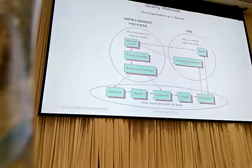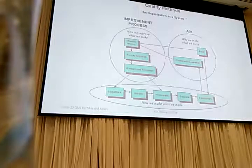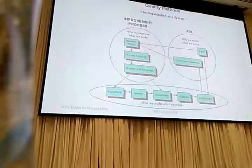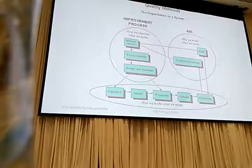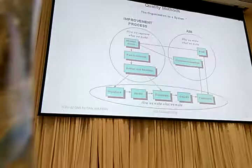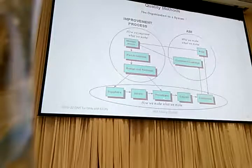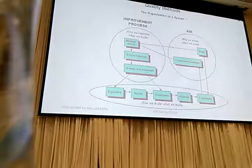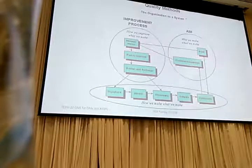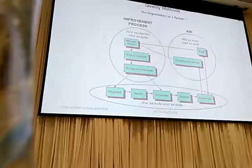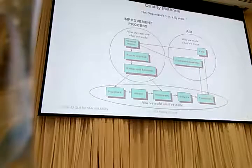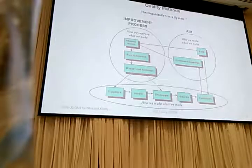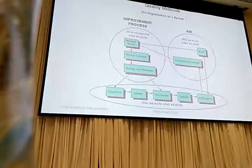Remember the quality method — we saw that diagram a number of times. The organisation as a system — that's the title. And the process: how do we make it work? Suppliers, inputs, processes, outputs, customers — that's the important list. Quite apart from being important for the exam, this diagram is just a very good one to show you how a business or an organisation should work.